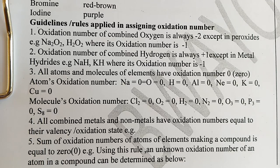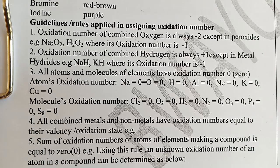Rule number three: all atoms and molecules of elements have oxidation number zero. Uncombined atoms are neutral — for example, sodium is zero, oxygen is zero, hydrogen is zero, aluminium is zero, neon is zero, potassium is zero, copper is zero.